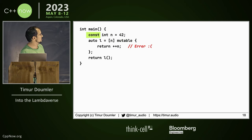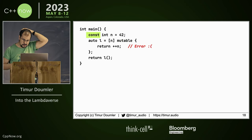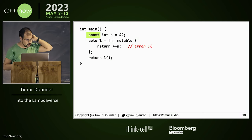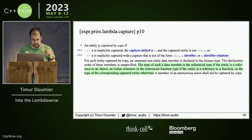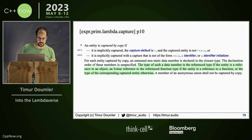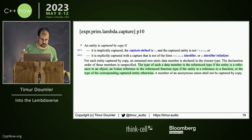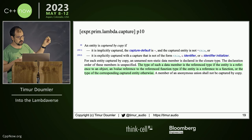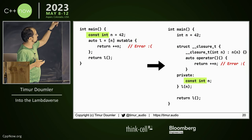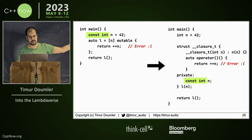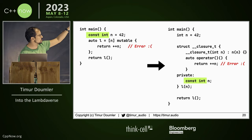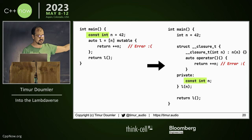But what happens here? I found that very confusing, but I found an explanation for that too. If you capture a variable by value, the standard says that the type of such a data member is the type of the corresponding captured entity. Which means that if this is a const int, that is also going to be a const int. And now we understand why there is an error even though operator() is not const.